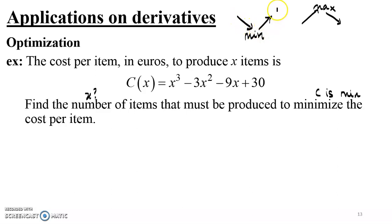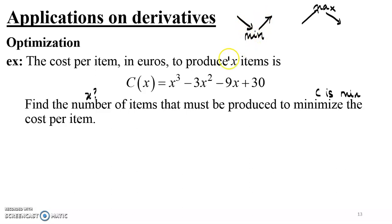When the first derivative is negative, the function decreases; when positive, the function increases; and when the first derivative is zero, there is a horizontal tangent at that point on the curve. If the curve changes variation around that point, then that point is an extremum — a minimum or maximum, depending on the sense of variation. However, if the first derivative is zero but the function does not change variation around it, then there is no maximum or minimum at that point.